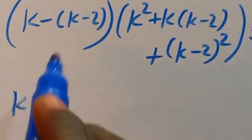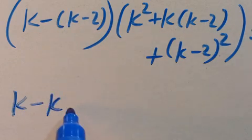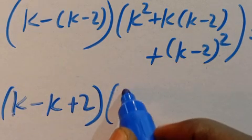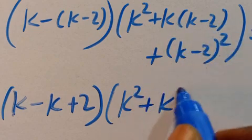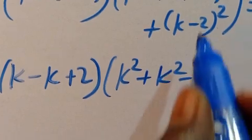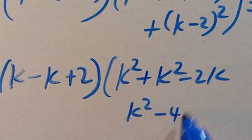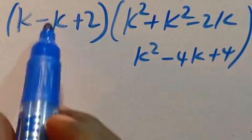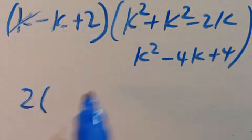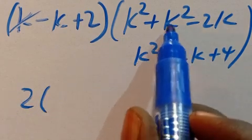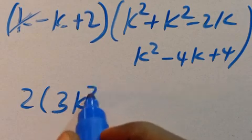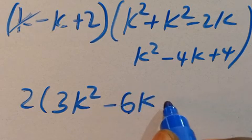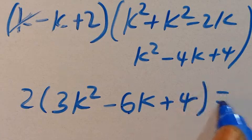So here k minus (k minus 2) gives 2. Opening the brackets, we have k squared, plus k squared minus 2k, plus k squared minus 4k plus 4, equals zero. Combining like terms, we get 3k squared minus 6k plus 4, equals zero.